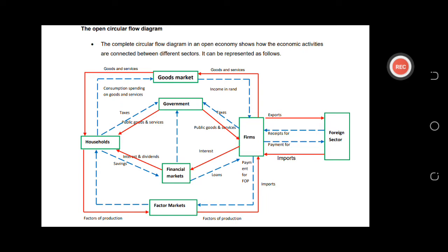Let's start with the household. If you check the blue line, it shows that the household saves into the financial market — that's where these two participants interact. As citizens of the country, we save money in our banks, meaning we interact with the bank. Once we save money in the bank, the bank pays us interest or dividends, which is indicated by the red line.